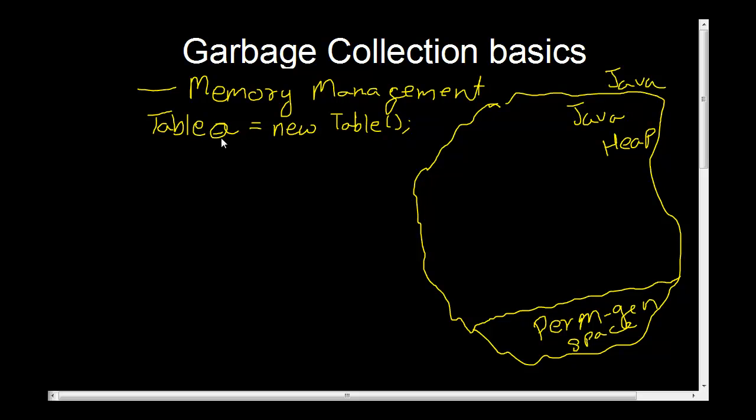This will create, as we have already covered, a reference object of type table. And this is an instance which is of type table, and this reference points to a real table object which is in the Java memory.